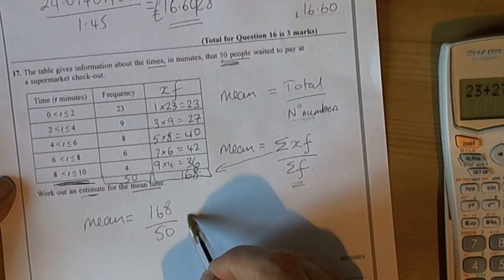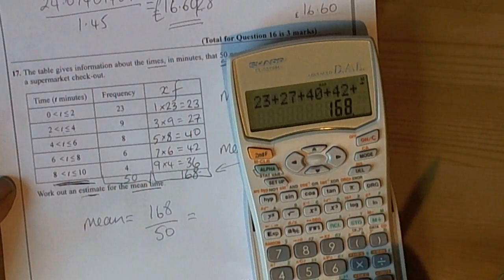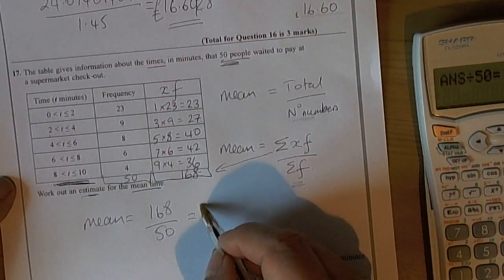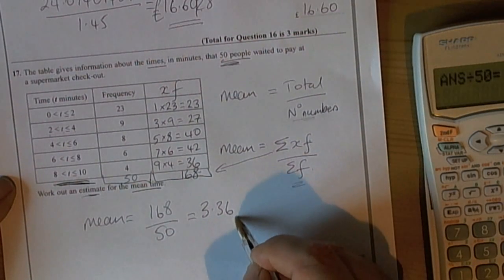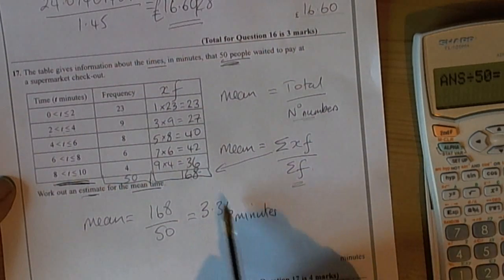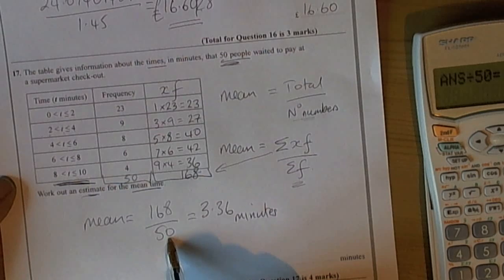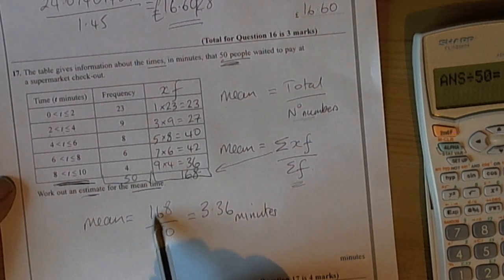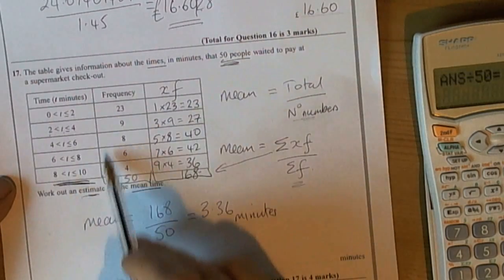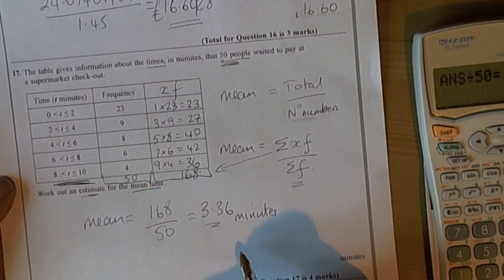So the mean average is found by doing the total time for all these 50 people, which we've estimated as 168 minutes, divided by 50 people. 168 divided by 50 equals 3.36 minutes. Now you could in your mind do a quick check to make sure that seems reasonable. 168 divided by 50 - well if we divide by 100 that would be 1.68. Because we want to divide by 50, we double that answer up.